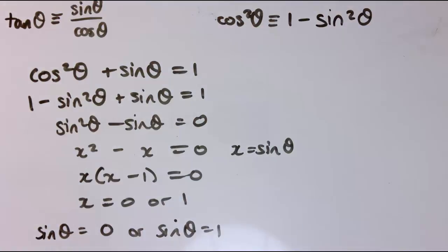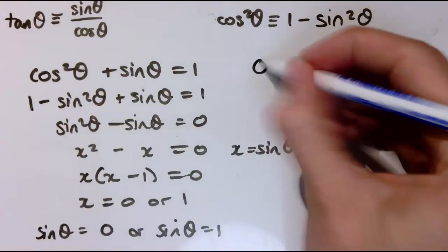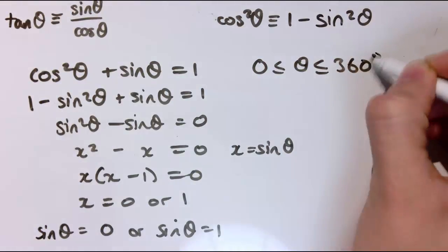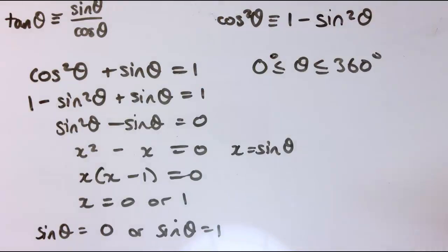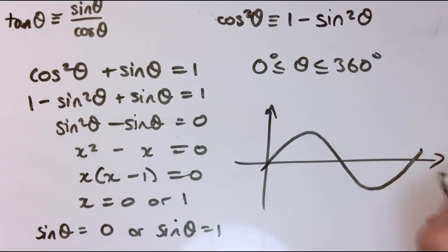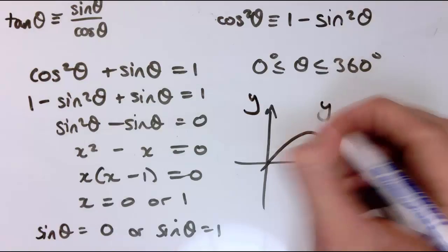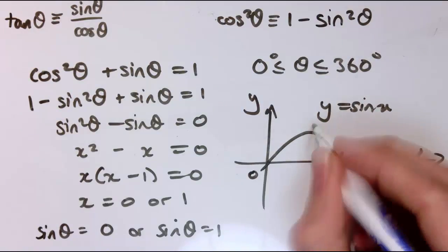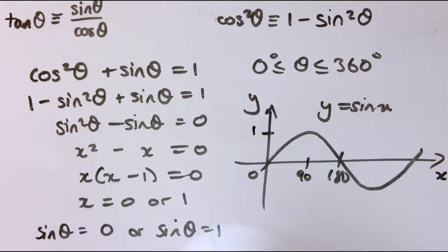Now, again, I need to give a range to solve this in. So let's solve it between 0 and 360 degrees. And sin θ looks something like this between 0 and 360. So 0 here, 180 here, 90 at the top there, where it gets to plus 1. 270 here, where it gets down to minus 1. And 360.